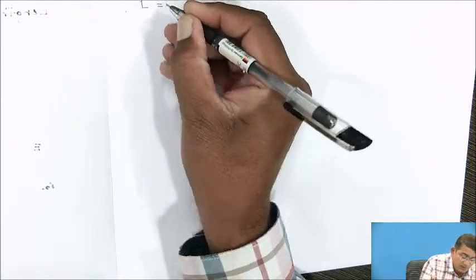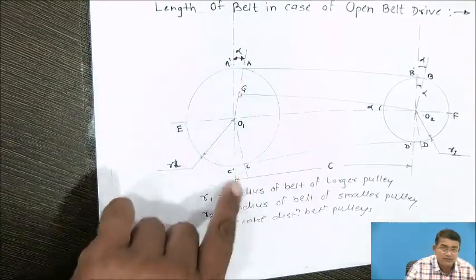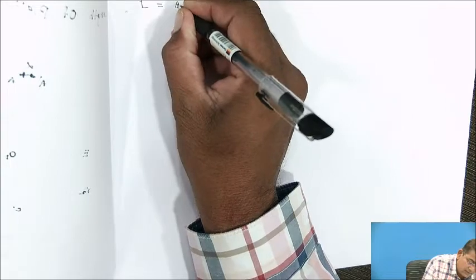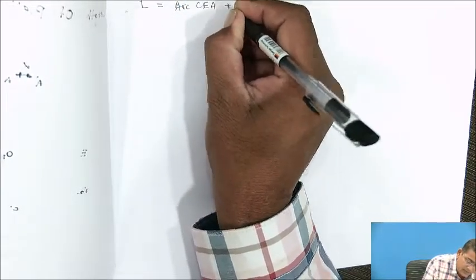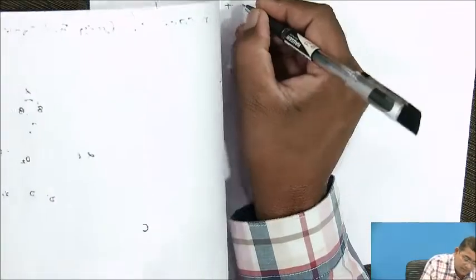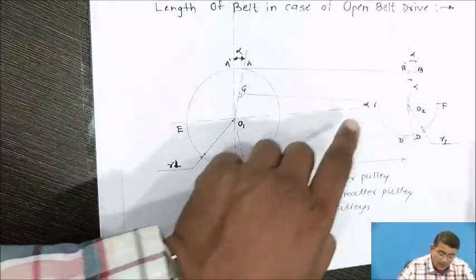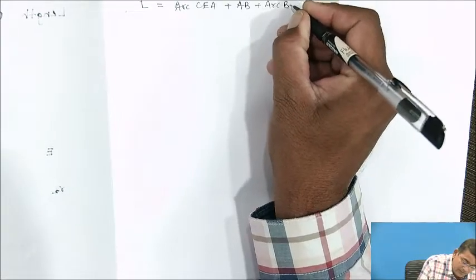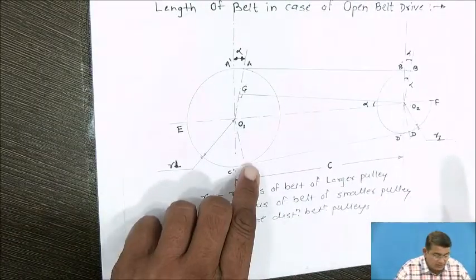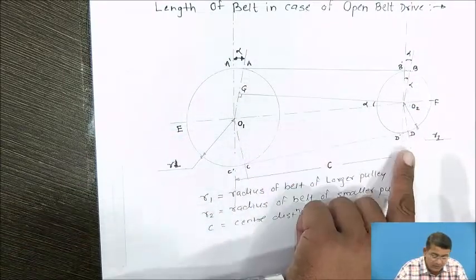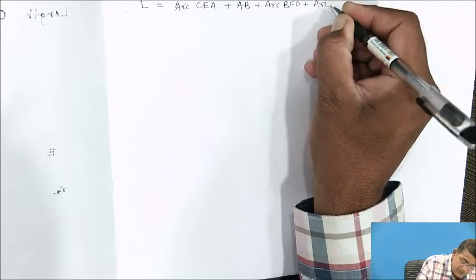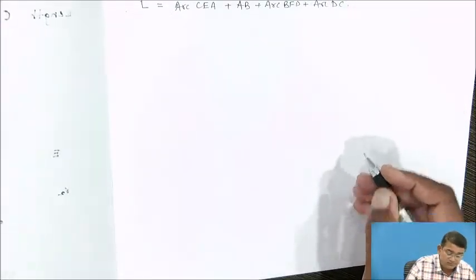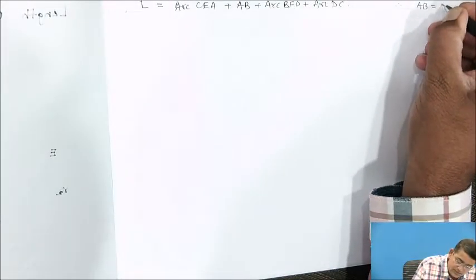For the total length L, you need to calculate: arc CEA, plus length AB, plus arc BFD, plus length DC. You assume that length AB and length CD are equal, so AB = CD.